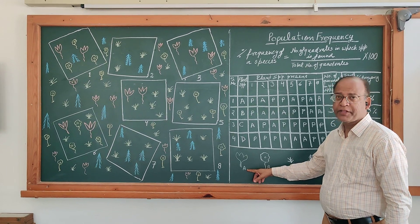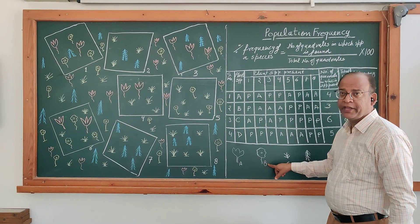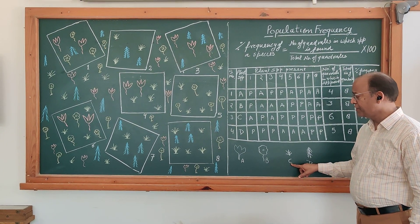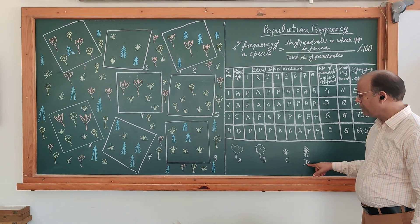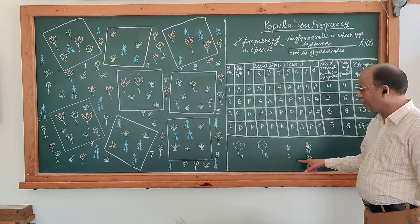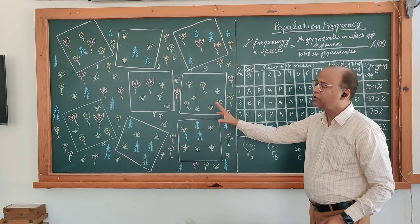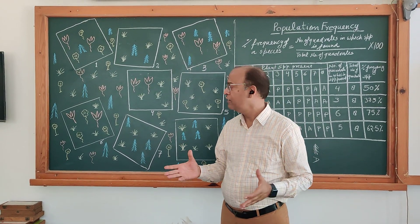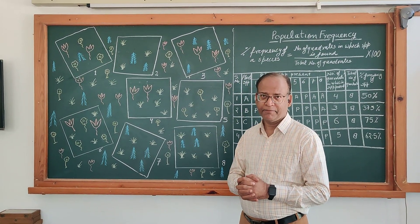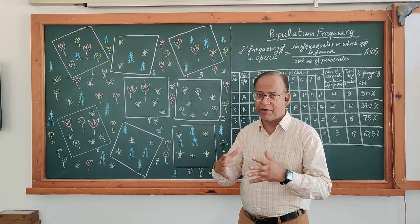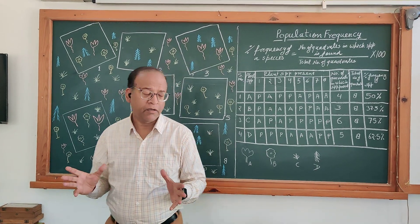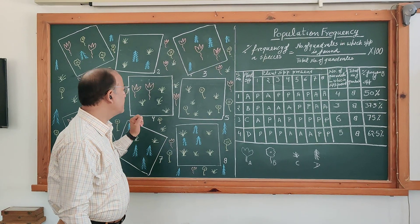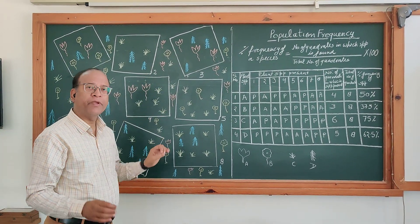Species A is represented by one symbol, species B by another symbol, species C by another symbol, and species D by another symbol. So these four species are here in this particular community. We randomly select eight quadrants, which are randomly thrown or marked in this community. The boundaries of quadrants should be clear.